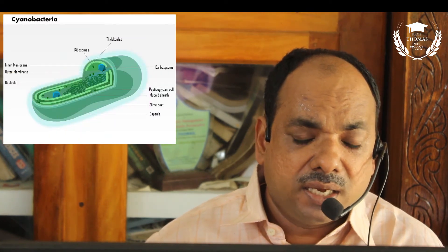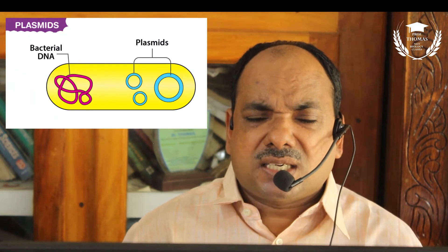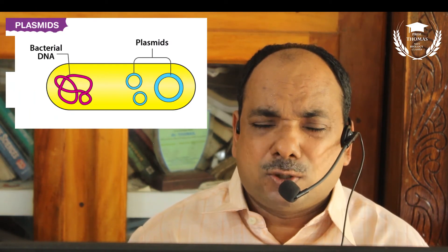Mesosomes and chromatophores are membranous structures. Chromatophores are present in cyanobacteria and contain pigments. Plasmids are extrachromosomal circular DNA capable of replication. They are used as vectors in genetic engineering.